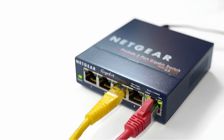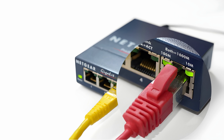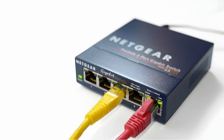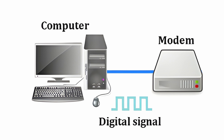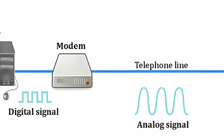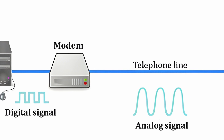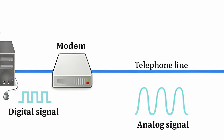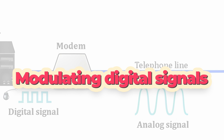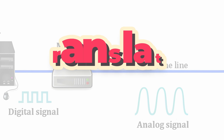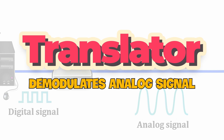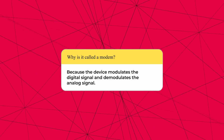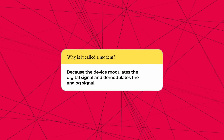A modem has two plugs: one that connects it to the telephone line and the other connecting into your computer or a Wi-Fi router. The modem takes the digital signal from the computer and adds it on top of an analog telephone signal so that it can be transferred through the telephone line. Since your modem sends information through a telephone line by modulating digital signals, it also needs a translator that helps it demodulate the analog signals it receives via the telephone line. Hence the word modem, as it both modulates and demodulates signals.